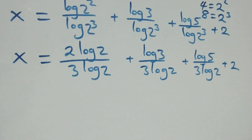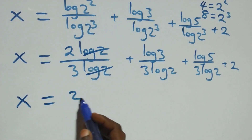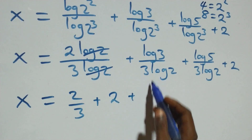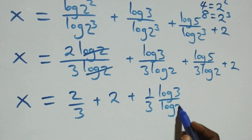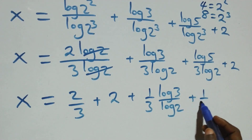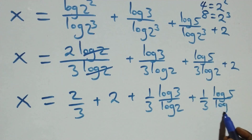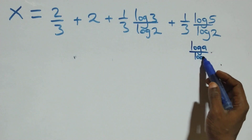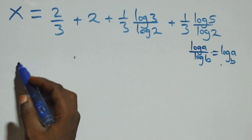Log two cancels in the first term, leaving two over three. We rewrite: x equals two over three, plus one over three times log three over log two, plus one over three times log five over log two. Applying the change of base rule — log a over log b equals log a to base b — this becomes x equals two over three plus one over three times log three base two plus one over three times log five base two.